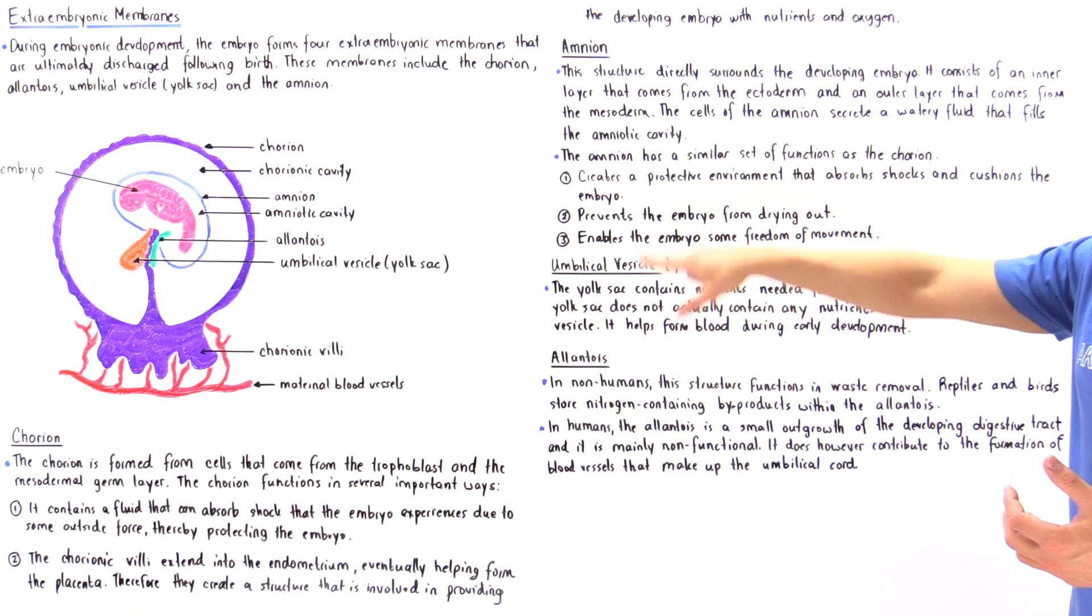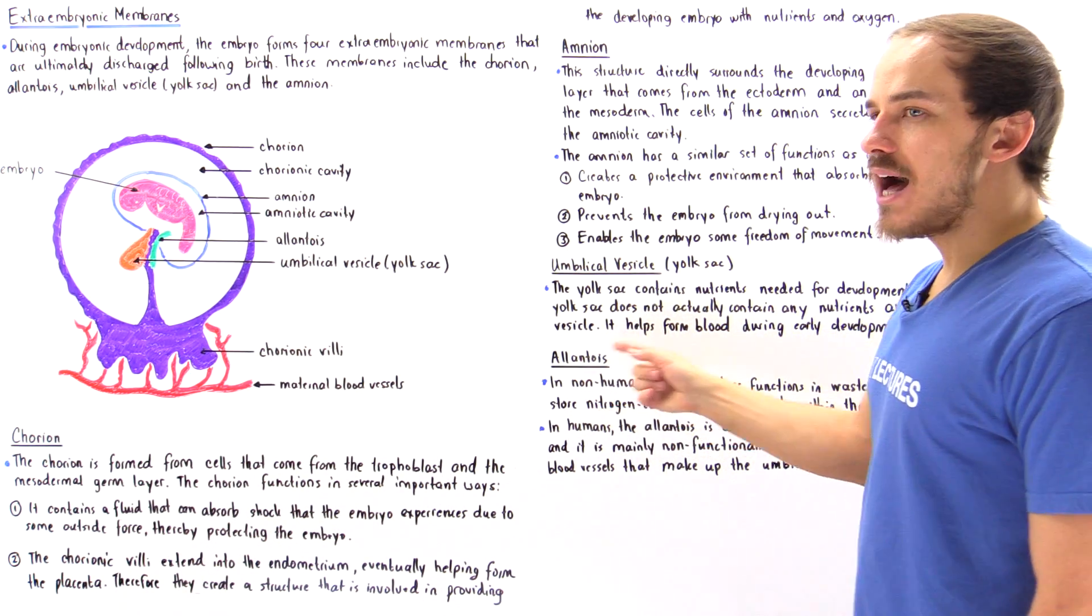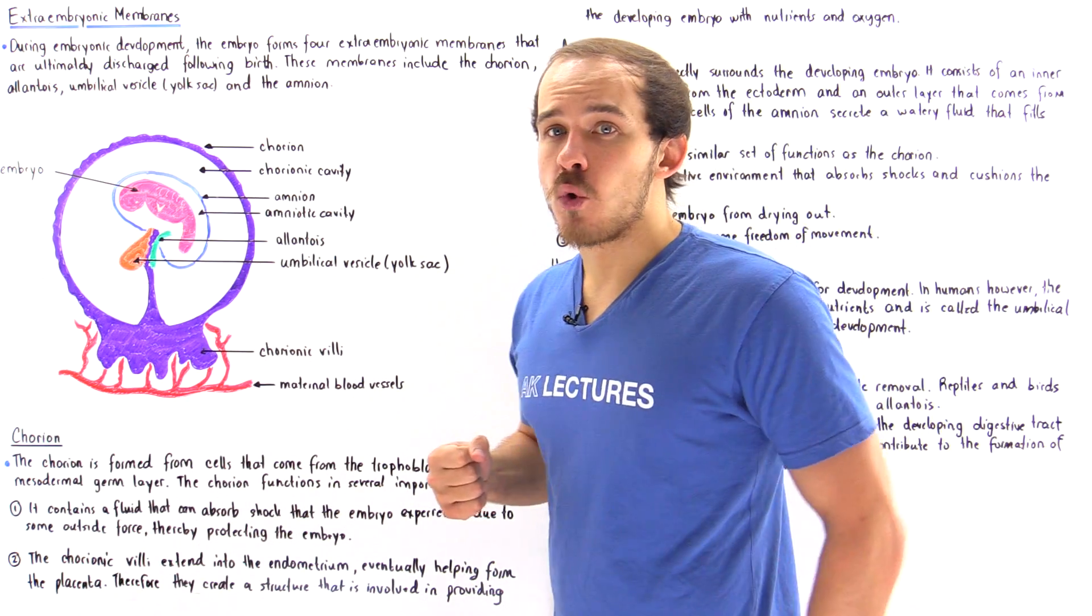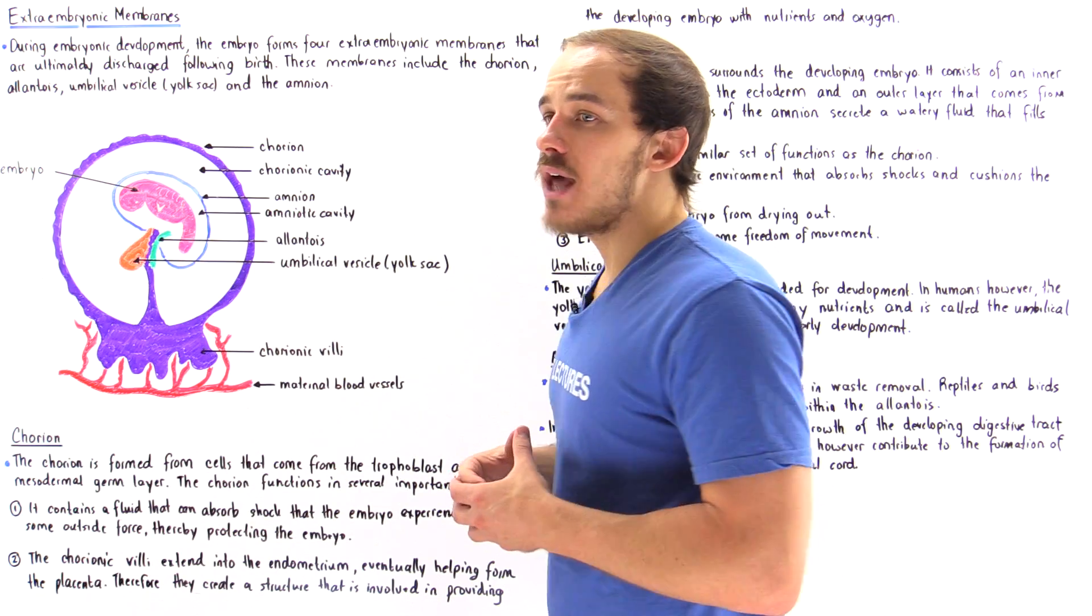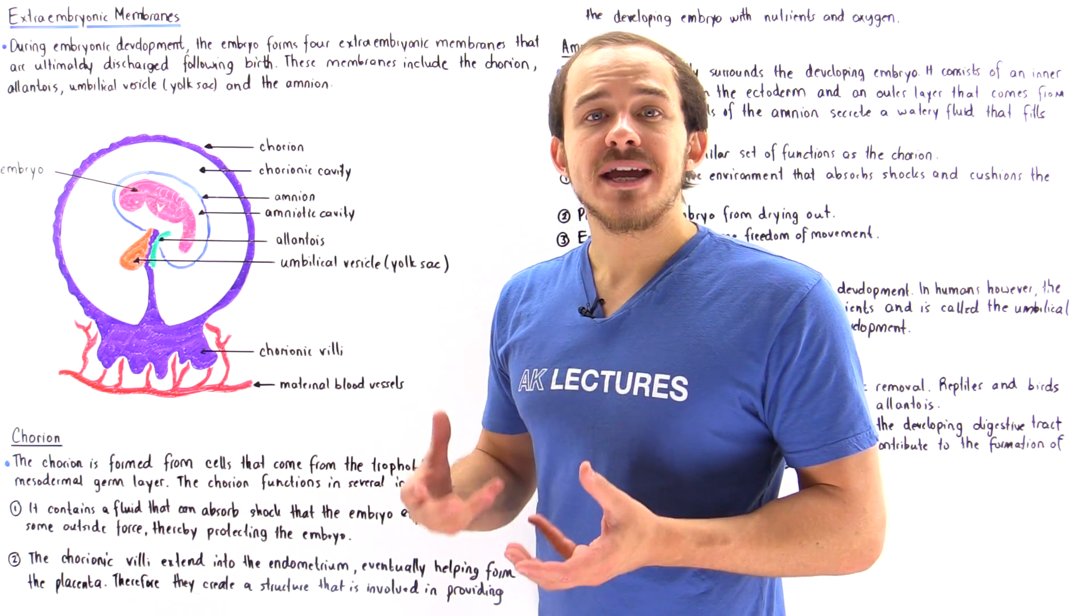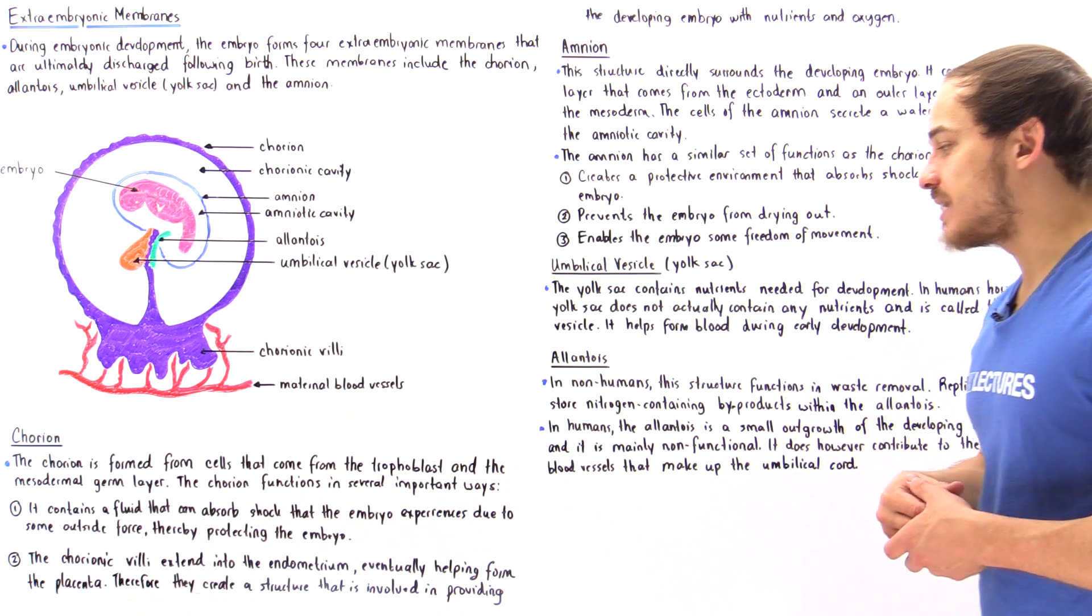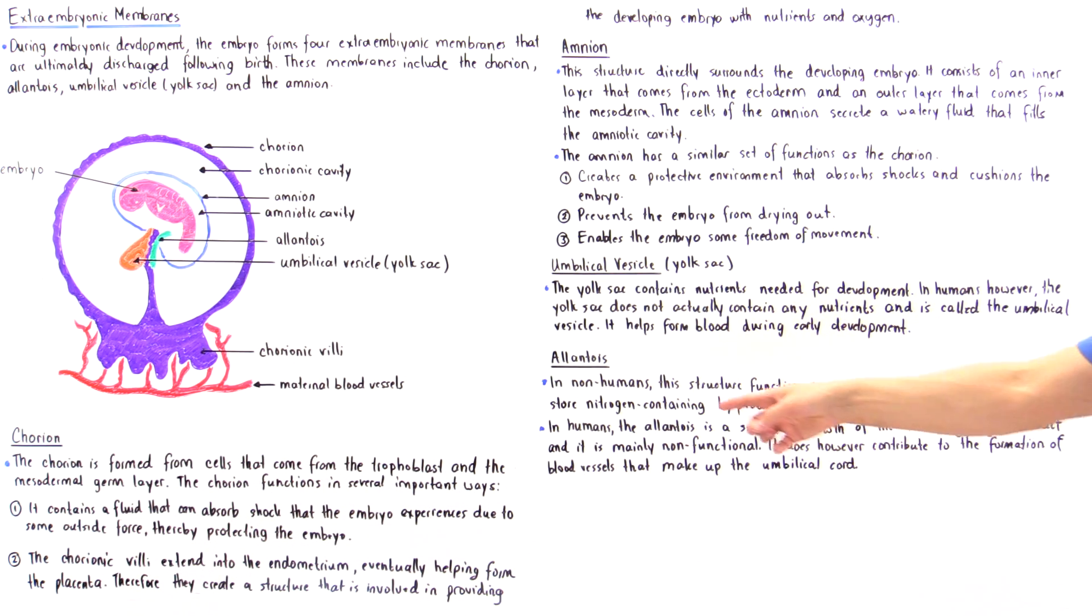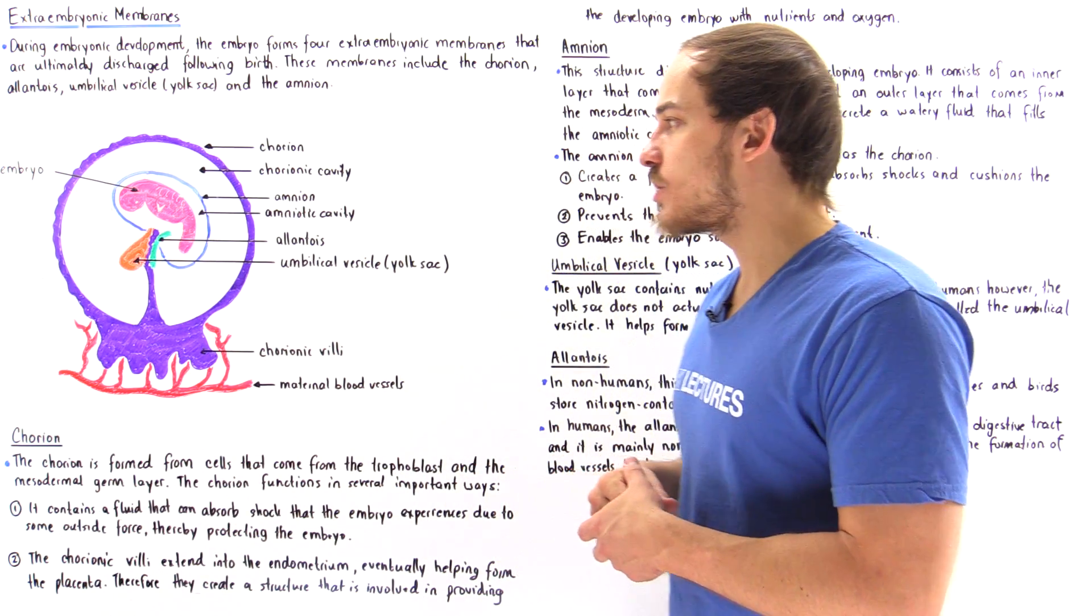Now the final extra embryonic membrane is the allantois. So in non-humans, this is a very important structure and it grows relatively large because what it does is it serves in waste disposal. So in non-humans, in reptiles and in birds, the allantois stores nitrogen-containing waste byproducts within that structure and eventually following birth, that allantois is actually discarded.